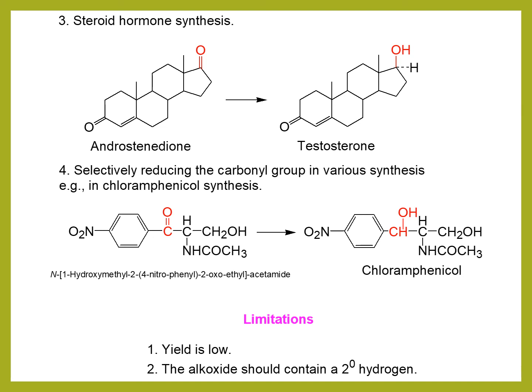Now I want to discuss about the limitations of this reaction. Every reaction has some limitations. The first limitation of this reaction is that the yield of this reaction is very low, so we have to consider it as one of the limitations. The second limitation is that the alkoxide catalyst should contain a secondary hydrogen — most specifically, the catalyst should be aluminum isopropoxide. As it is the only choice, we can consider this as a limitation of this reaction.